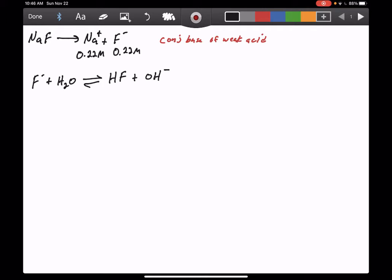Because this is in equilibrium we can write an ICE box for this reaction. We know that we have 0.22 molar of F minus, 0 HF and 0 OH minus to start with. As the hydrolysis proceeds in the forward direction to reach equilibrium, we lose x amount of F minus, gain x amount of HF, and gain x amount of OH minus. At equilibrium we add up the I and C lines and we have 0.22 minus x for the fluoride, x for the HF, and x for the OH minus.